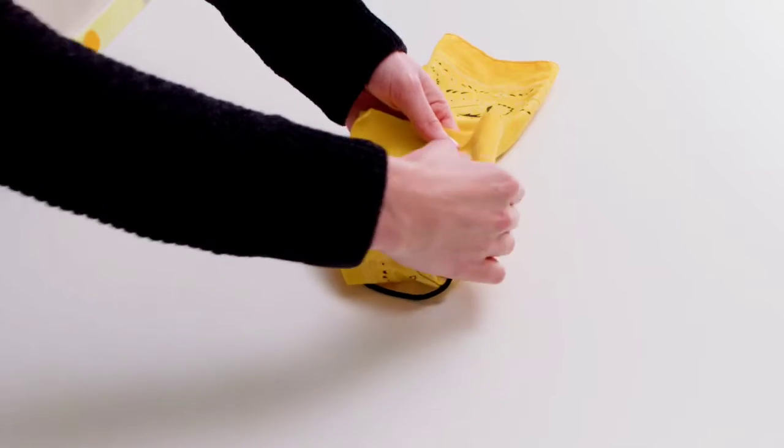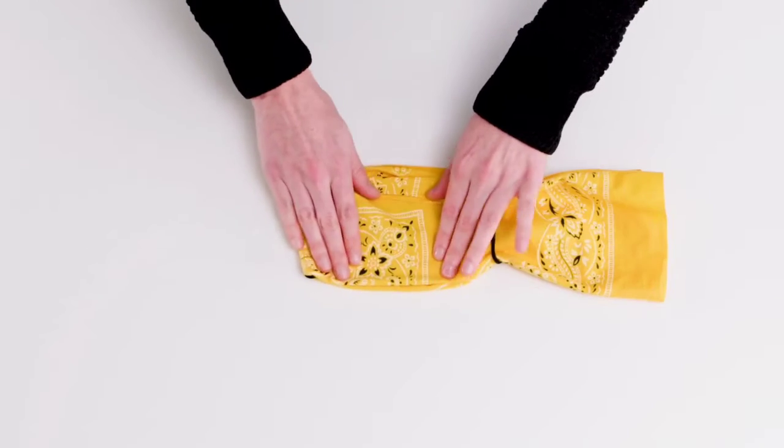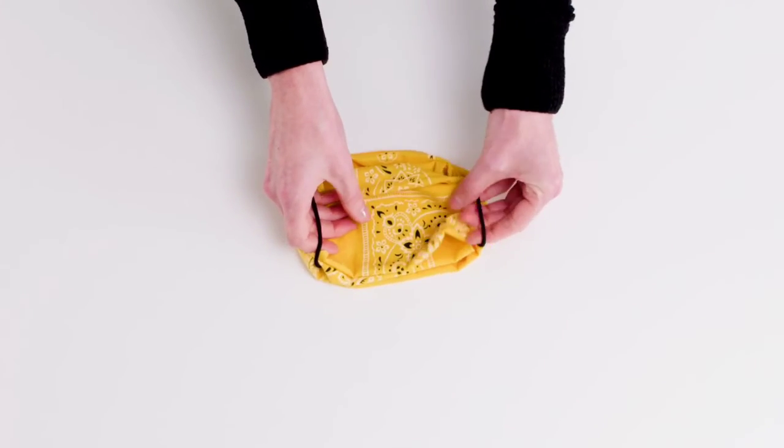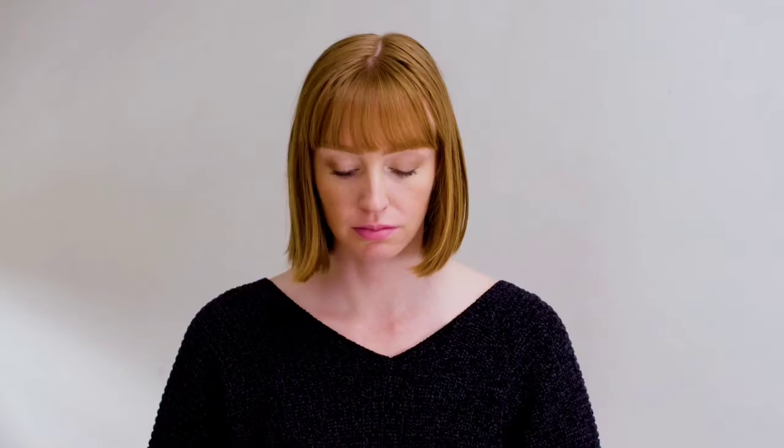Now fold the outer edges of the cloth in, layering on top of each other. Pick up the bands on either side and wrap the bands around your ears.